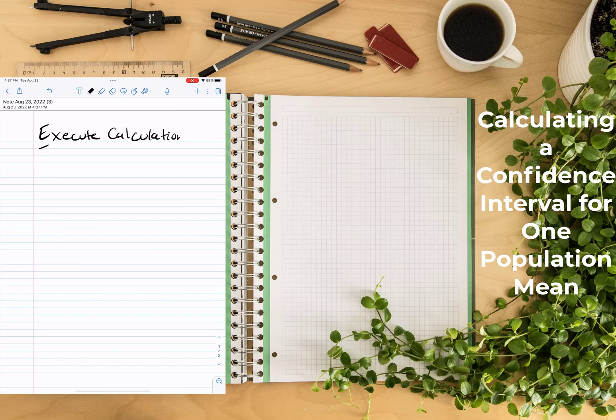So next in FRED, we execute calculations. So we start with the sample mean, which remember we denote with x̄. So here we have 3.16 as our sample mean.